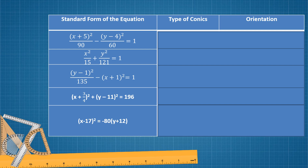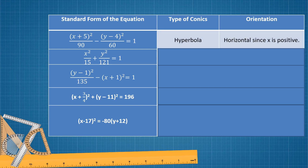Let's identify the types of conics and orientation of these five examples. First, (x plus 5) squared over 90 minus (y minus 4) squared over 60 equals 1. Since there is a fraction involved, we're going to choose only between an ellipse and hyperbola. But since the two terms are separated by a minus sign, the type of conics is hyperbola and the orientation is horizontal, since x is positive.